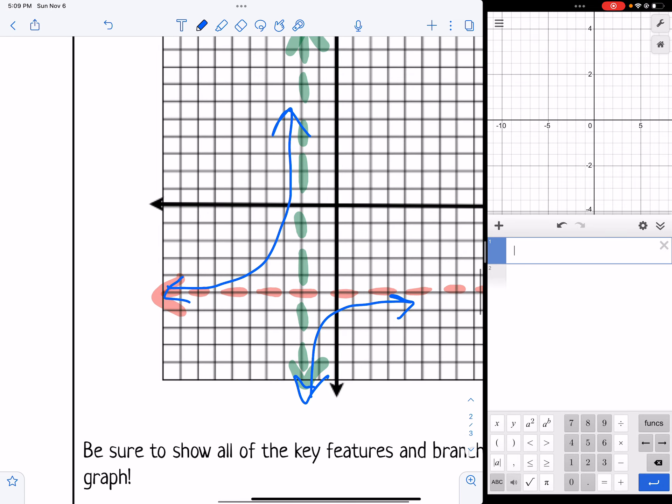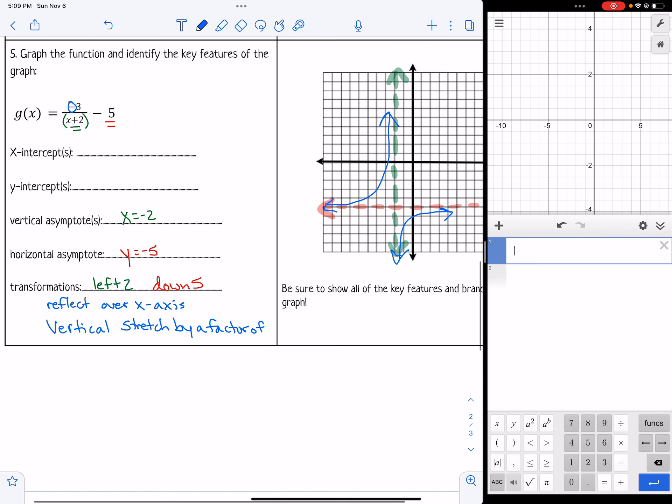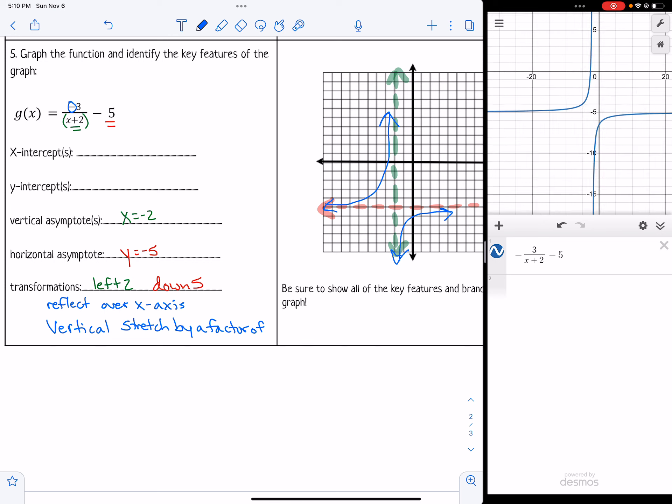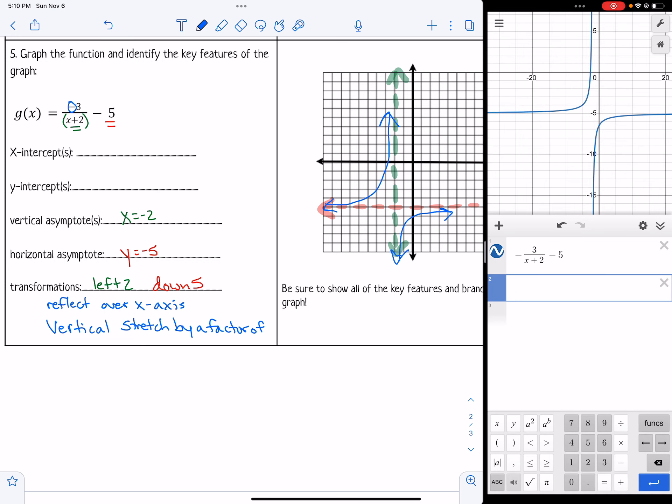And we can also type it in to figure out x-intercept or y-intercept and just check everything. So let's type it in. Negative 3 over x plus 2. So make sure all of the x plus 2 is in the denominator. Then minus 5. So all of that looks nice. And I can even type everything in.